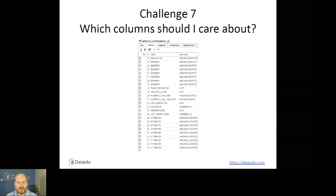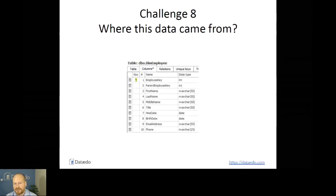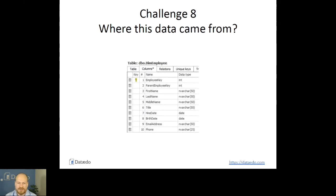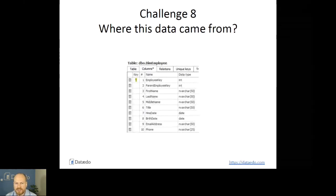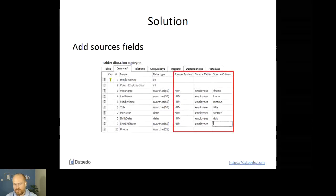Challenge number eight: where does this data come from? I have a dimension table from a data warehouse on screen, and I'm wondering — did that come from CRM, or did it come from our ordering system? You could add a simple list of metadata fields that would tell you what the source system is, what the source table or even source column is.